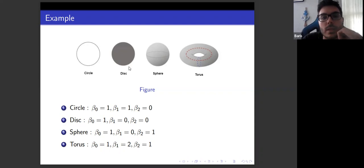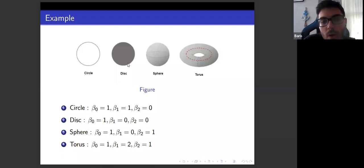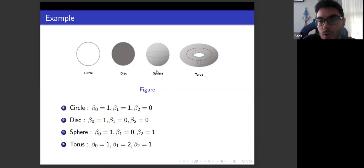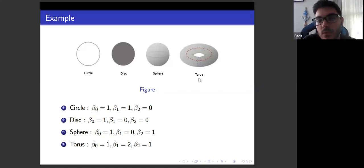For the disk: beta_0 equals 1 (one connected component), beta_1 equals 0 (no one-dimensional hole), and beta_2 equals 0 (no cavity). For the sphere: beta_0 equals 1, beta_2 equals 1 (it has a cavity), and beta_1 equals 0 (no one-dimensional hole). Finally, the torus has beta_0 equals 1 (one connected component), beta_2 equals 1 (has a cavity), and beta_1 equals 2, because there are two one-dimensional holes on the torus, represented by the blue and red circles.